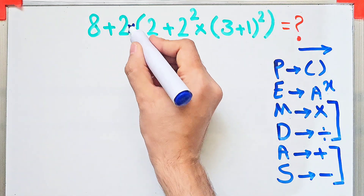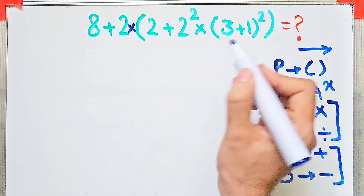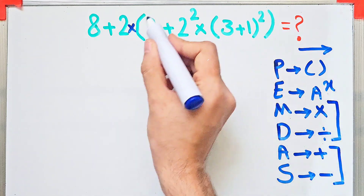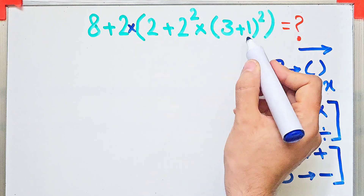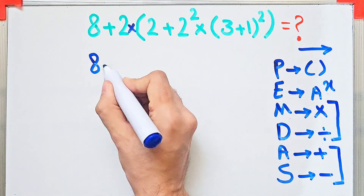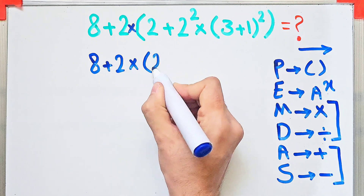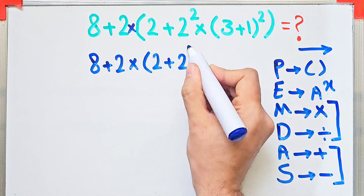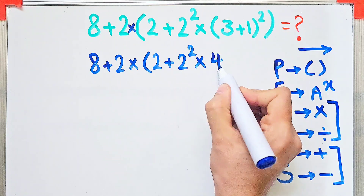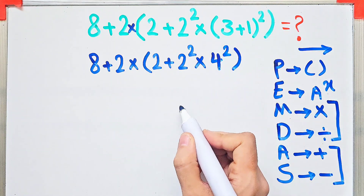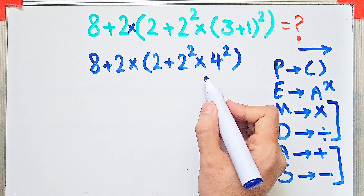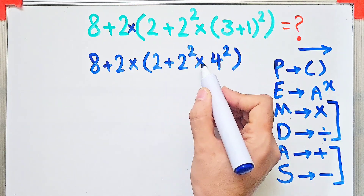In this question we have addition, multiplication, parentheses, and exponent. First we simplify the parentheses. Inside these parentheses we have another set of parentheses: 8 plus 2, then times 2 plus 2 to the power of 2 which equals 4, then times 3 plus 1 which equals 4, then to the power of 2. Again, we simplify the innermost parentheses. Inside we have addition, multiplication, and exponent.